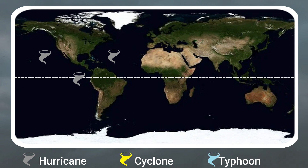Cyclones are formed near the South Pacific and the Indian Ocean and sometimes east of Africa. Typhoons are the same thing that occur near the west Pacific around countries like Philippines, China and Japan. Sometimes they rotate clockwise and sometimes counterclockwise.